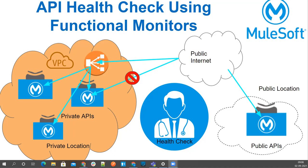If you want to periodically check the health of these APIs, this can be achieved via functional monitoring. We can create monitors and periodically check the health of any API, whether public or private. Functional monitoring is actually a framework that allows us to check the accessibility of public and private APIs.